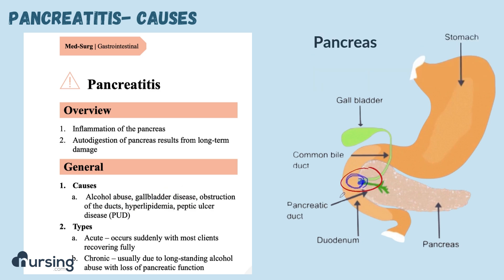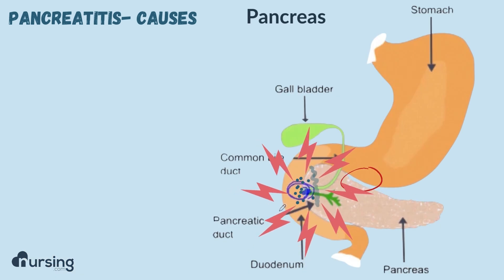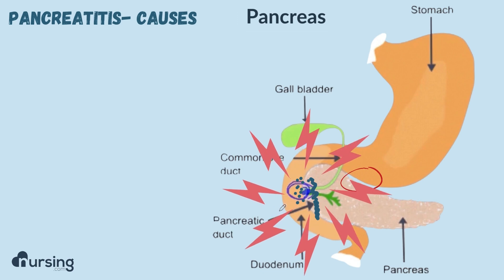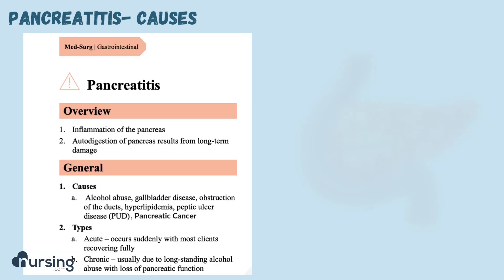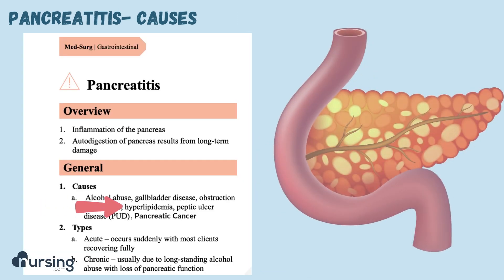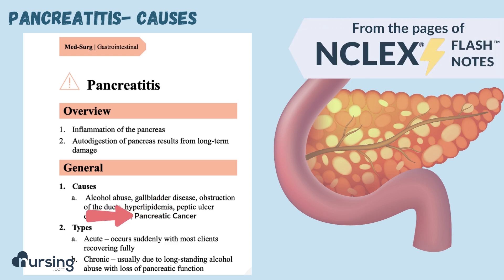You can see here that the exocrine duct of the pancreas joins with the common bile duct right before it enters the duodenum. So if there are gallstones blocking this up, or if there's inflammation in the bile ducts, it can obstruct the pancreatic duct as well. We also have things like hyperlipidemia, peptic ulcer disease, and pancreatic cancer, which can all cause pancreatitis.